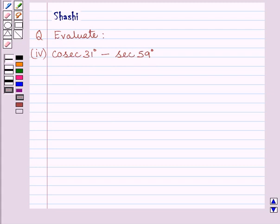First of all, let us understand that if theta is any acute angle in a right triangle, then cosec(90 - θ) equals sec θ. This is the key idea to solve the given question.